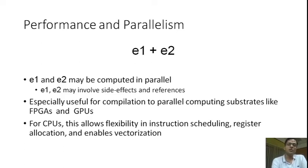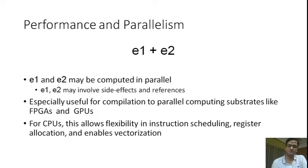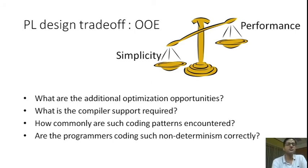However, non-determinism in the evaluation order of expressions was perhaps introduced for a purpose. Consider the expression E1 plus E2. The expression encodes the fact that the evaluation of E1 may proceed concurrently with the evaluation of E2 — for example, E1 and E2 may be computed in parallel, even if they involve side effects and references. Such semantics are especially useful for compilation to parallel computing substrates like FPGAs and GPUs. Even for CPUs, this allows flexibility in instruction scheduling, register allocation, and enables optimizations like vectorization. In our work, we explore this fundamental programming language design trade-off related to order of evaluation.